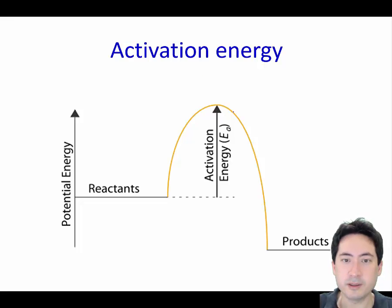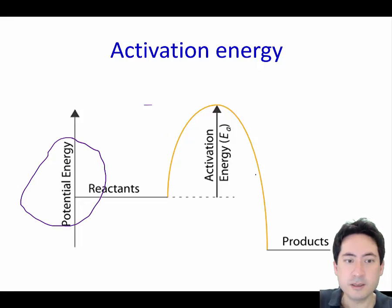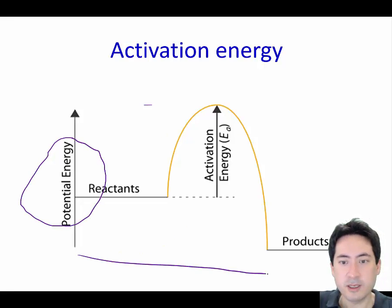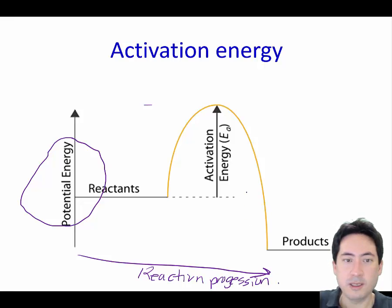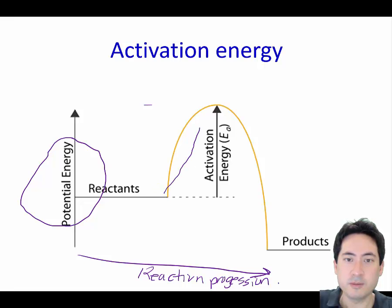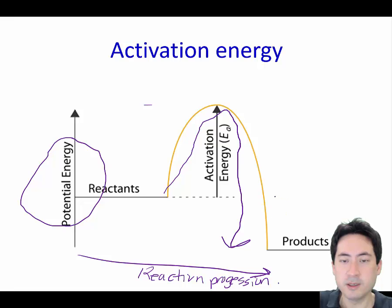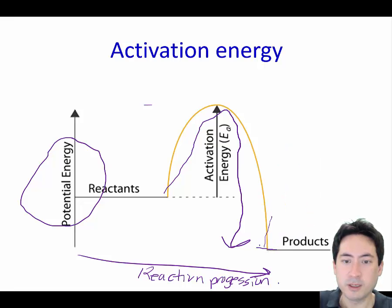We use an enthalpy diagram here. It's important to know what's on the axes: this is potential energy, and this is the reaction progression. This amount of energy is needed to initially break the bonds and form the products, whether going in the exothermic or endothermic direction. For the endothermic direction, the activation energy will be a lot higher.